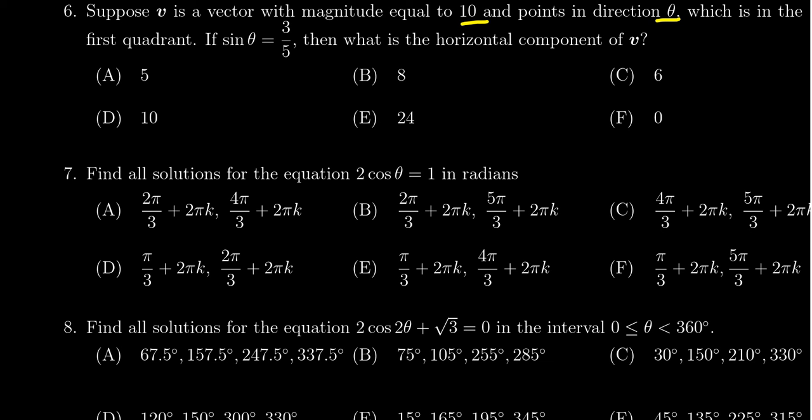We're not given the angle theta directly, but we do know that it's in the first quadrant and the sine ratio is 3 fifths. We then want to compute the horizontal component of V.